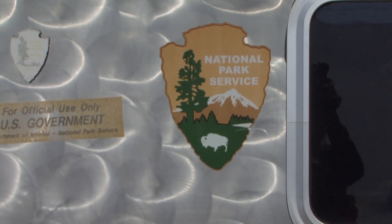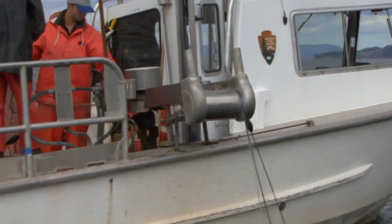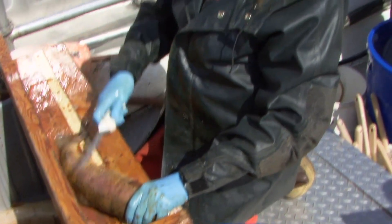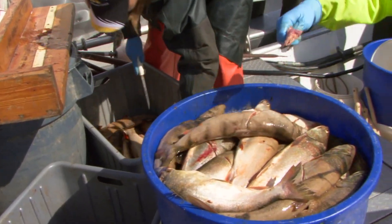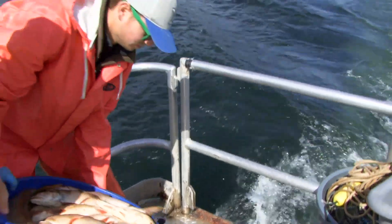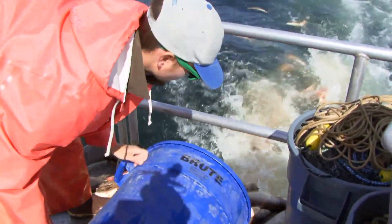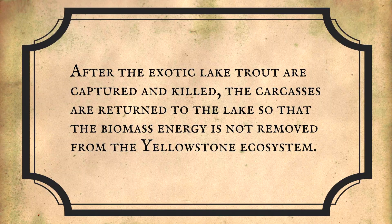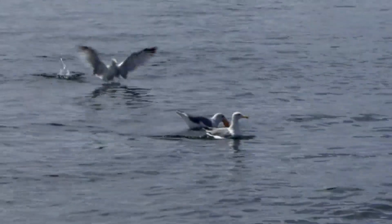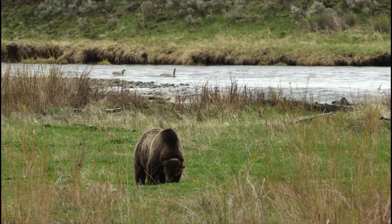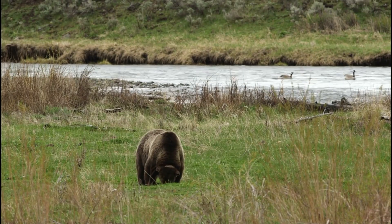The National Park Service response has been to try to suppress the lake trout population, and though costly, it has had an impact. Through gill netting and other techniques, the lake trout population has declined by 79% since 2012. Over 4 million lake trout have been removed from the lake since control efforts began. At the same time, the Yellowstone Cutthroat population has increased, and there is the possibility that scavengers and predators may take advantage of Yellowstone Cutthroat recovery.